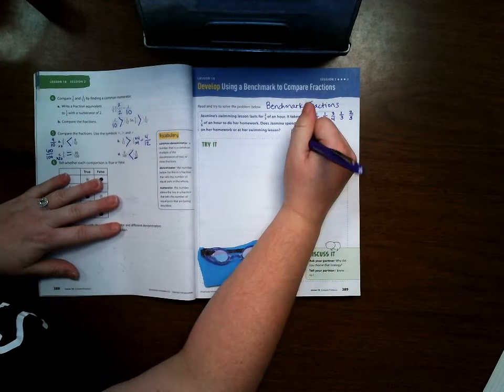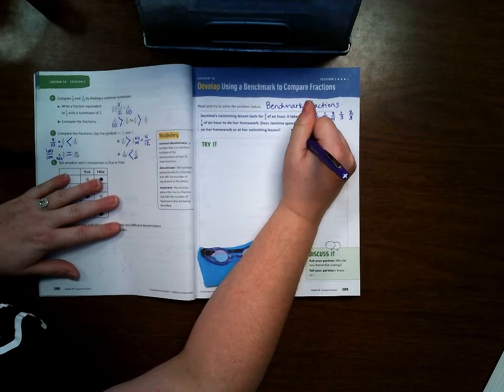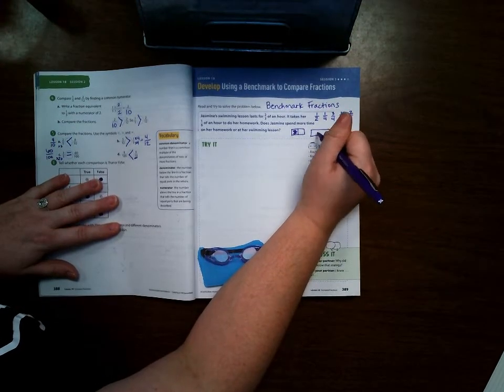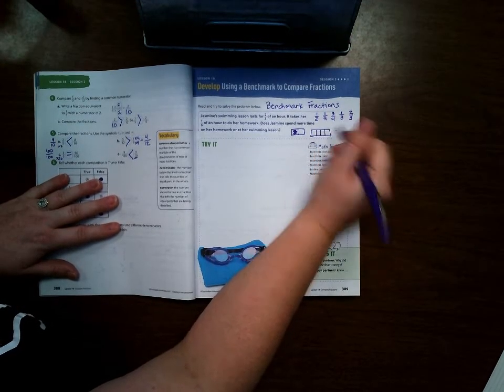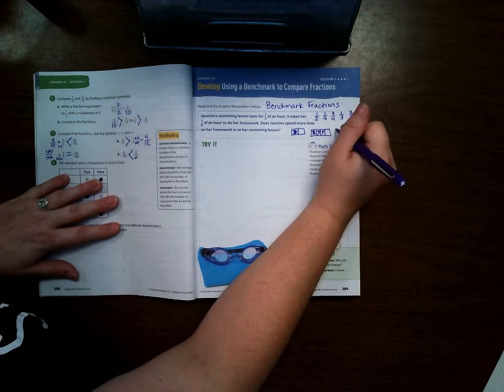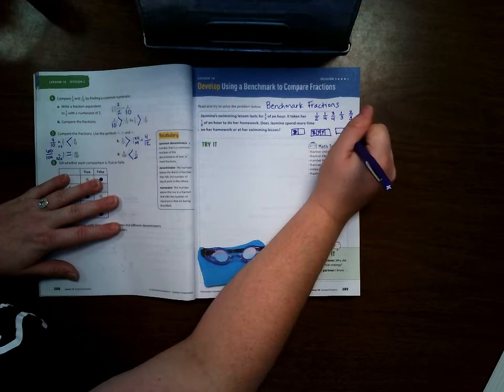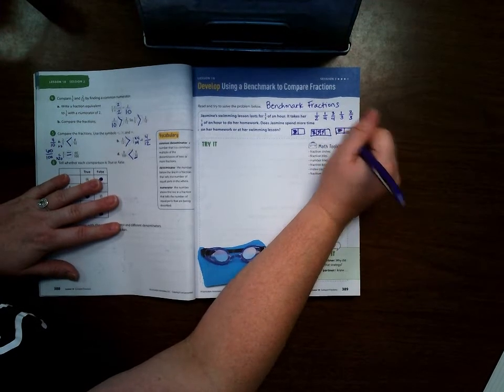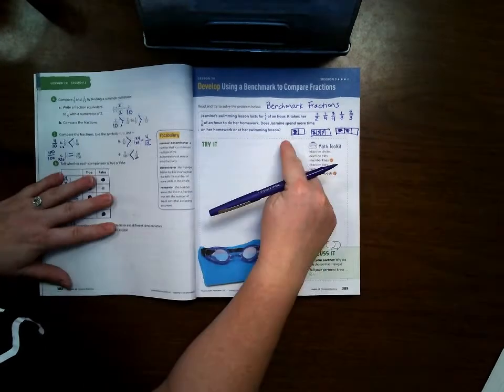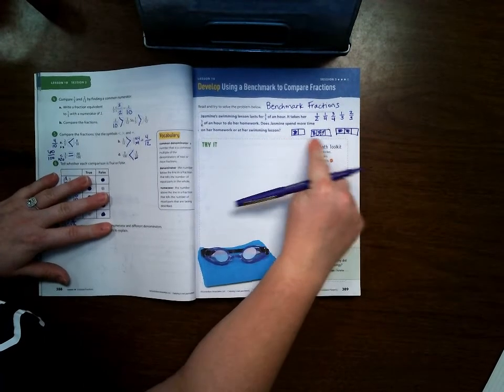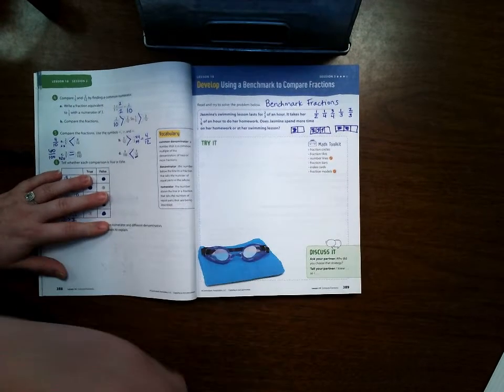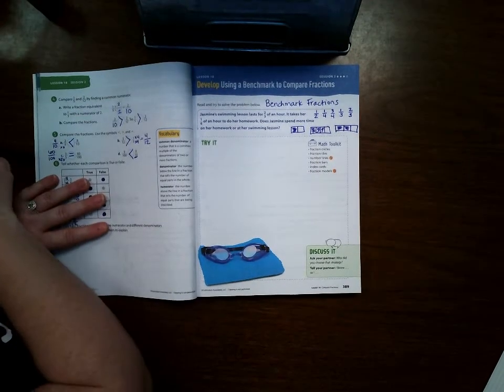So you have one-half, and then you can easily do one-fourth or three-fourths, and then you have the thirds. So you can easily do one-third and two-thirds. Our focus on this lesson is being able to use these types of fractions to help us compare the size of numbers.